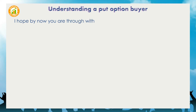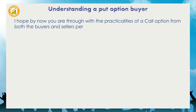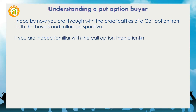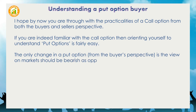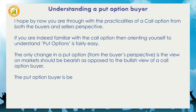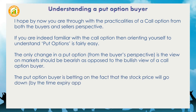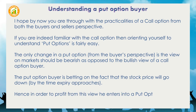I hope by now you are through with the practicalities of a call option from both the buyer's and seller's perspective. If you are indeed familiar with the call option then orienting yourself to understand put options is fairly easy. The only change in a put option, from the buyer's perspective, is that the view on markets should be bearish as opposed to the bullish view of a call option buyer. The put option buyer is betting on the fact that the stock price will go down by the time expiry approaches, and hence enters into a put option agreement.